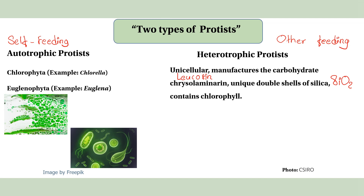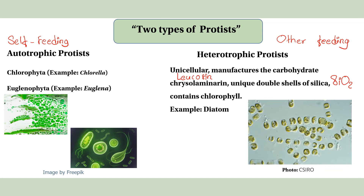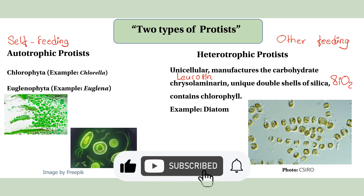Chlorophyll is a key pigment in autotrophic protists. This has been an overview of the Kingdom Protista. If you have any questions, please like and subscribe to our channel.